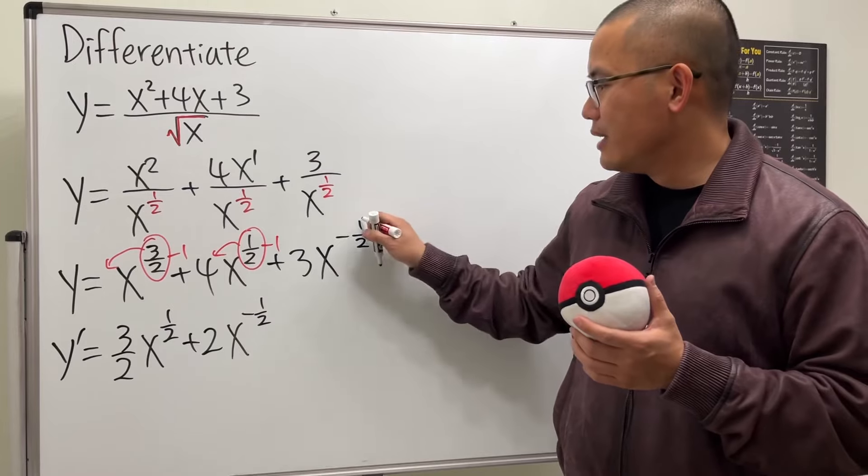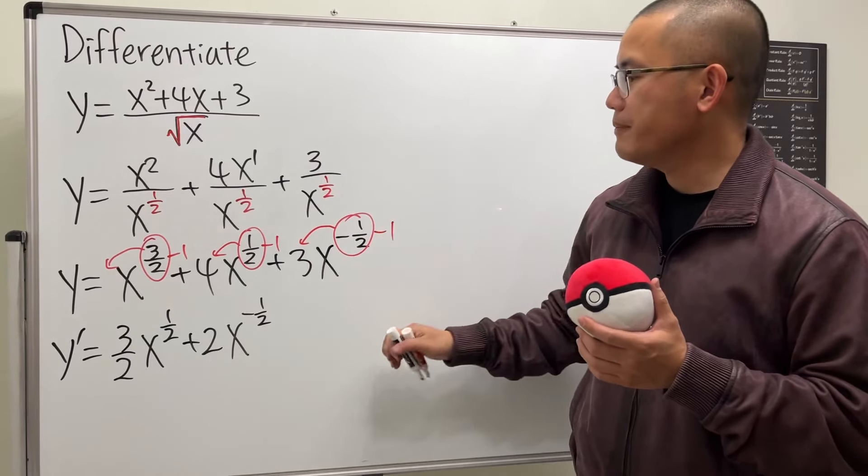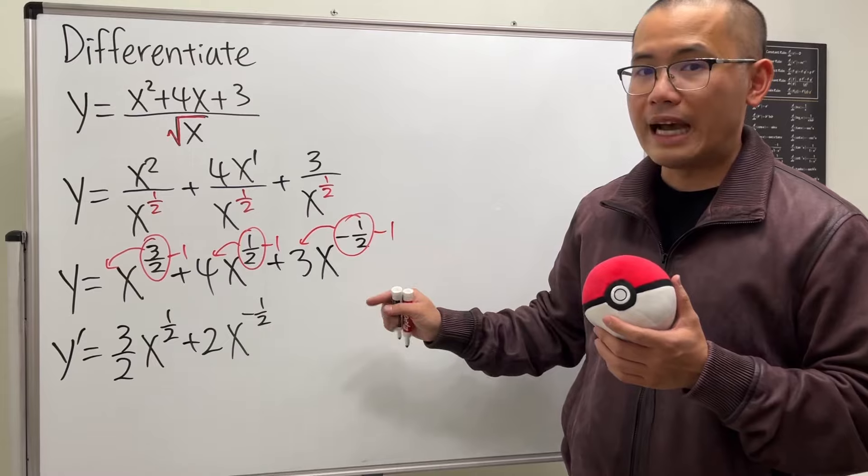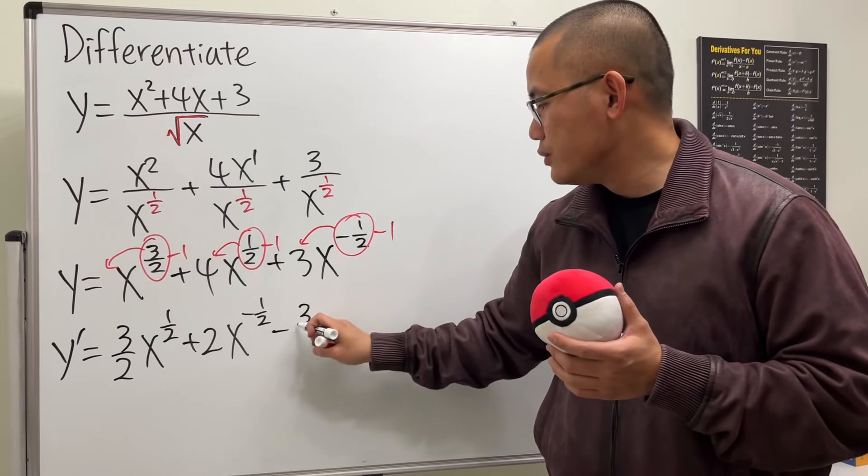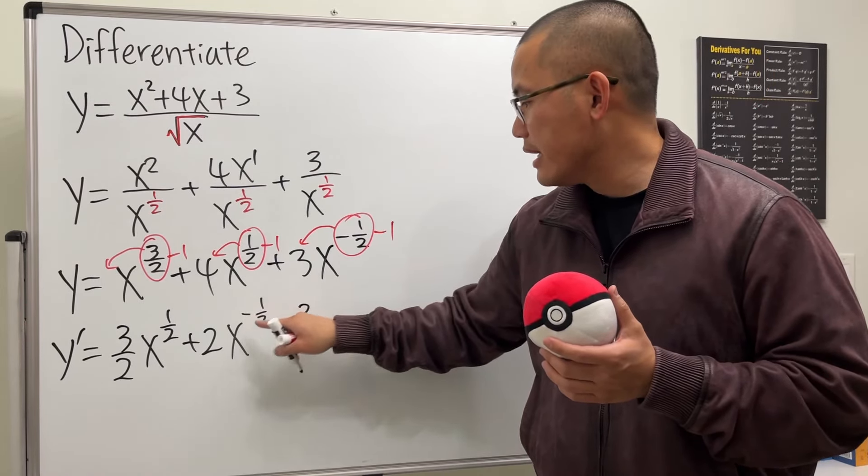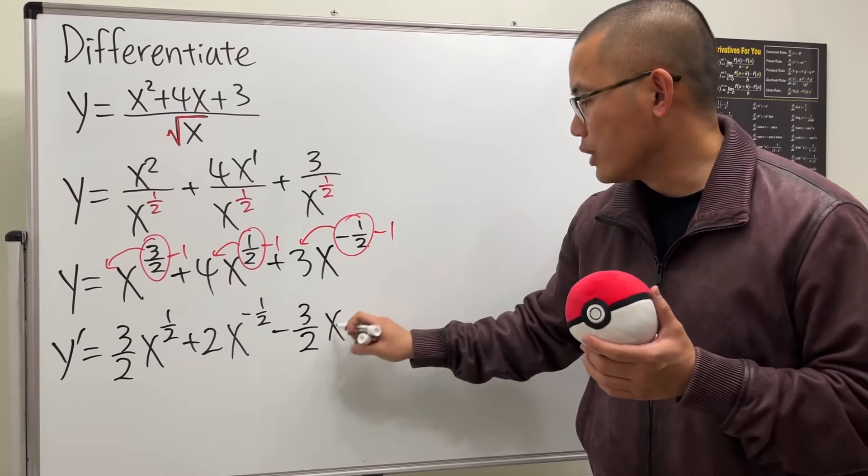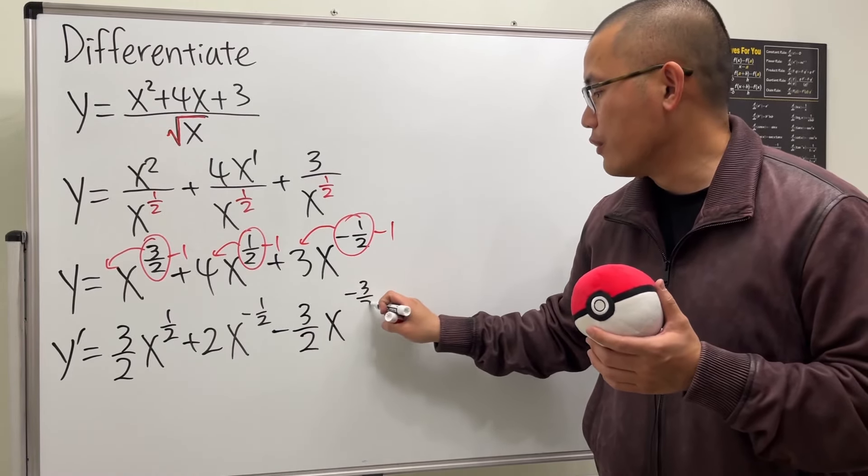Lastly, put the negative 1 half to the front and then minus 1. 3 times negative 1 half is negative 3 over 2. And then negative 1 half minus 1 will give us negative 3 over 2.